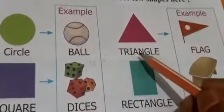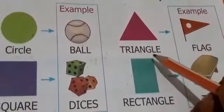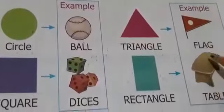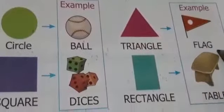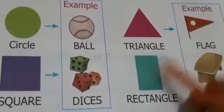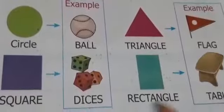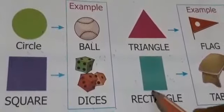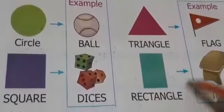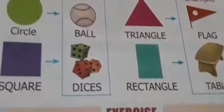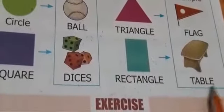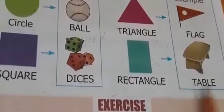Triangle — T-R-I-A-N-G-L-E — triangle. Triangle में example के रूप में flag आता है — F-L-A-G, flag. Rectangle — R-E-C-T-A-N-G-L-E — rectangle. Rectangle में table आता है — T-A-B-L-E, table.